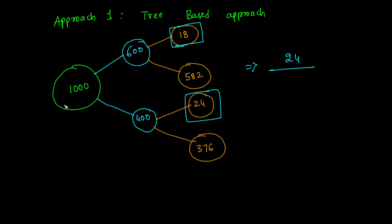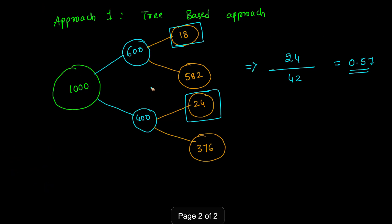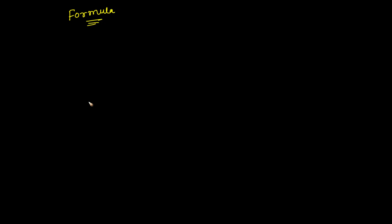Out of 42 cars involved in an accident, 24 belong to company B. So the probability is 24/42, which gives 0.57. Option B is correct. This is the simplest way to solve the problem using the tree-based approach.